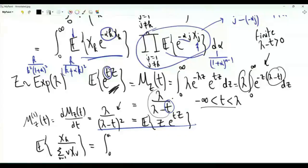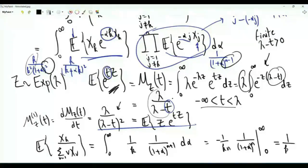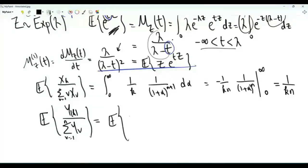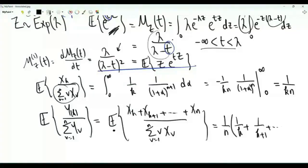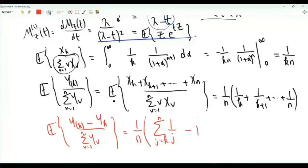Therefore, the expectation of xk over the sum of v times x_v from v equals one to n equals the integral from zero to infinity of one over k times one over one plus alpha to the power n plus one, with respect to alpha. The anti-derivative is minus one over k times n times one over one plus alpha to the power n. Applying the limits of integration gives one over k times n. Consequently, the expectation of y(k) in brackets over the sum of all y's equals, by linearity of expectation, one over n times the bracket one over k plus one over k plus one plus all the way to one over n. This gives us the final result: the expectation of y(k) in brackets over the sum equals one over n times the summation of one over g, for g from k to n.